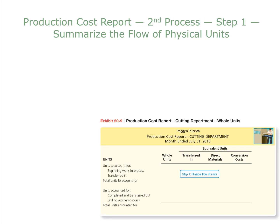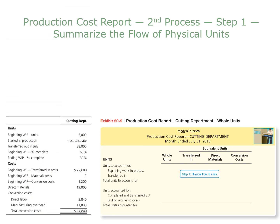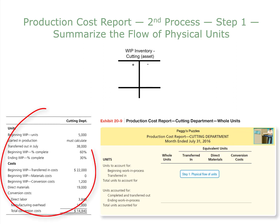The first step for preparing the production cost report is summarizing the flow of physical units — the actual puzzles being made. We'll work with the costs later. Here's the information we need for the cutting department for the month of July. To show the flow of physical units, it is easier to visualize the flow if we have a T-account for the cutting department's work in process inventory account.